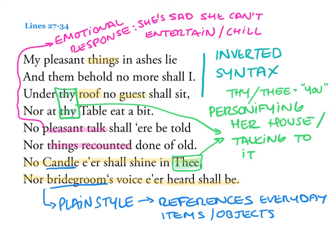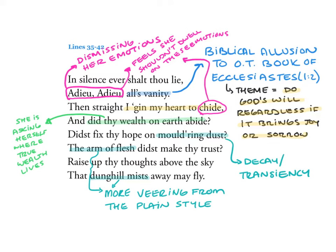'So, in silence ever shalt thou lie. Adieu, adieu. All's vanity.' She's dismissing her emotions — she feels like she shouldn't be dwelling on those feelings. This vanity phrasing is another biblical allusion, this time to the book of Ecclesiastes. Her audience would have been very familiar with these biblical passages and wouldn't skip a beat when they read this.